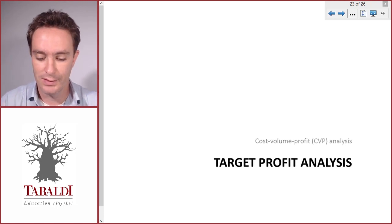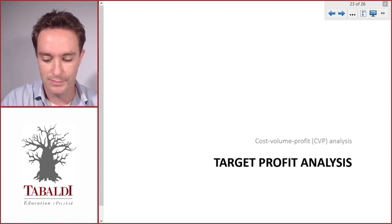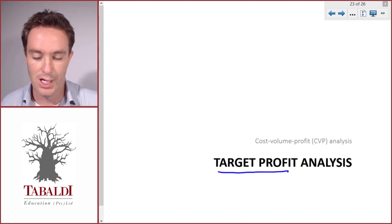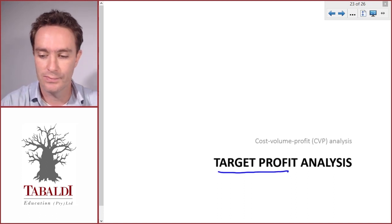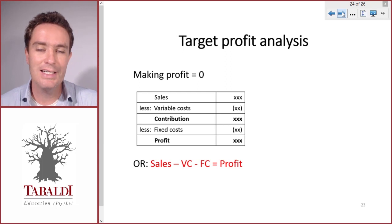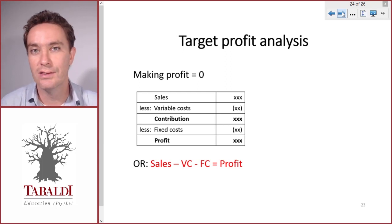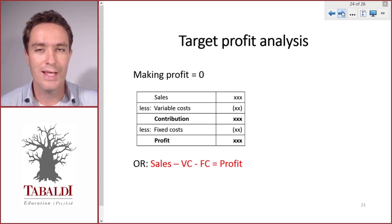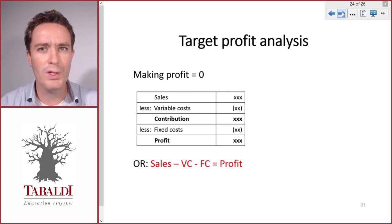So this is called a target profit - how much profit we are aiming for. Let's see how to calculate the number of units required to make a target profit without using any formulas. We don't want to have to memorize lots of formulas, but we'll get to the formula later on.